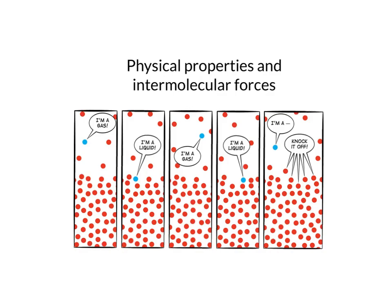The physical properties of substances depend on the intermolecular forces between those substances. For instance, whether a substance is a liquid or a gas will depend on the strength of those intermolecular interactions.